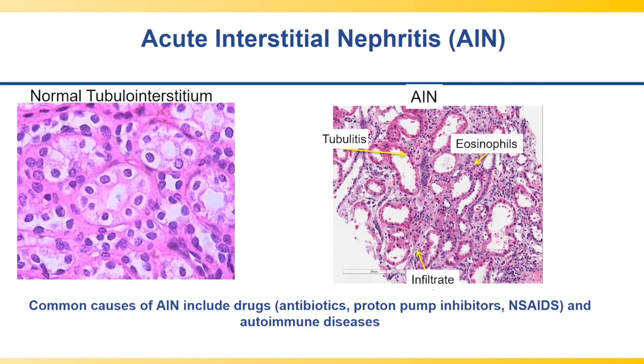The common causes of AIN include drugs, antibiotics, proton pump inhibitors which are used for gastritis, painkillers such as NSAIDs, and autoimmune diseases.